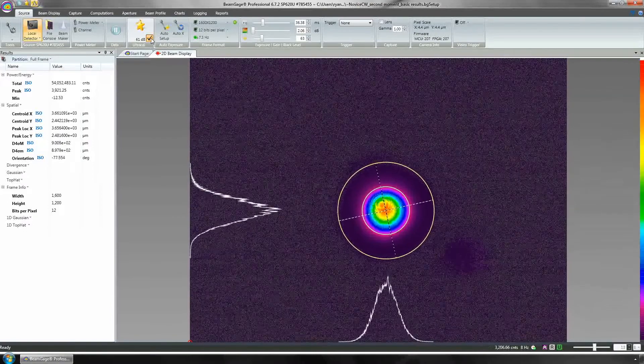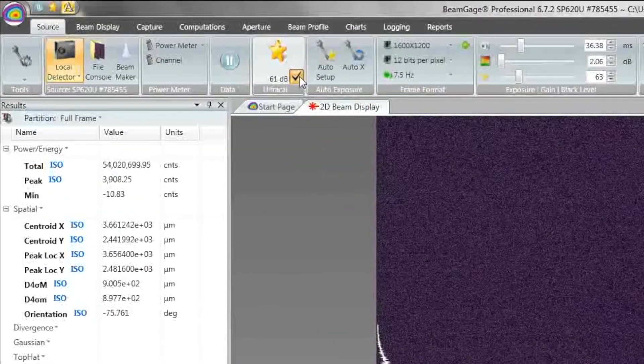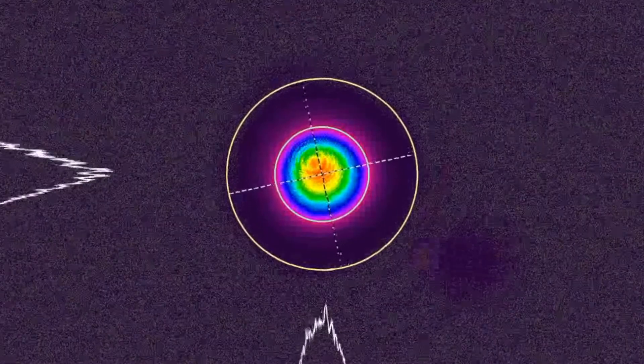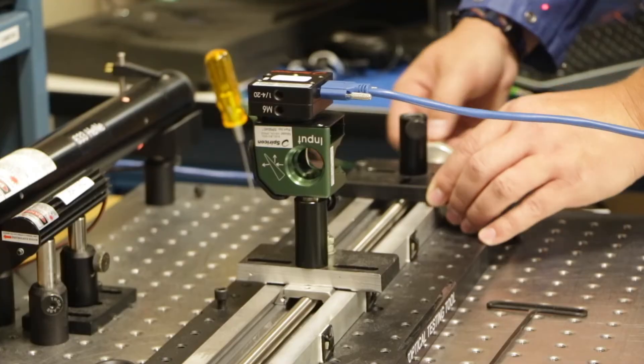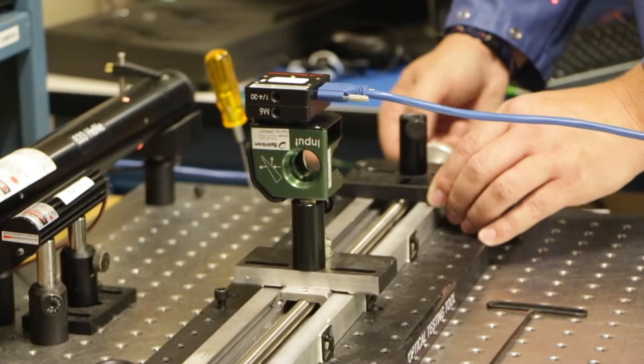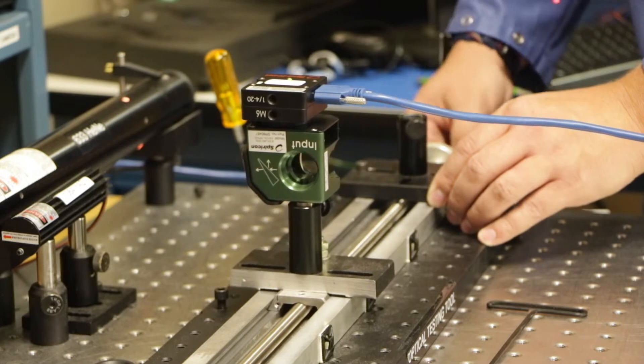Standard commercially available beam profiling systems provide laser beam profile measurements and images of the laser beam under test. Unfortunately, most systems do not indicate where in the laser's propagation axis the measurement is being made.